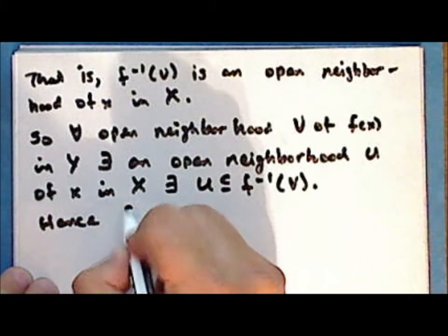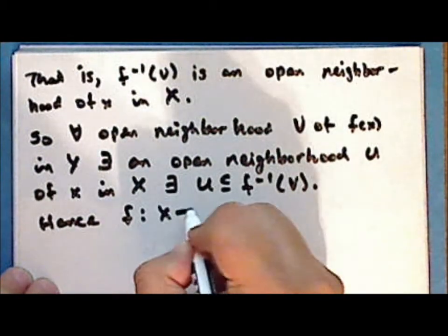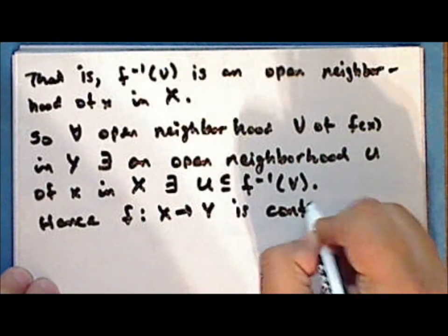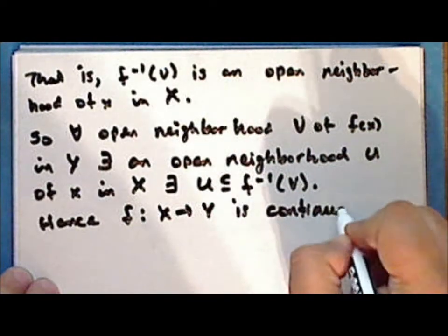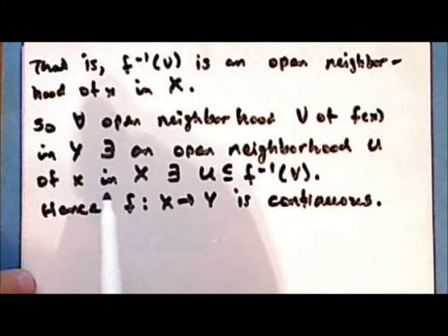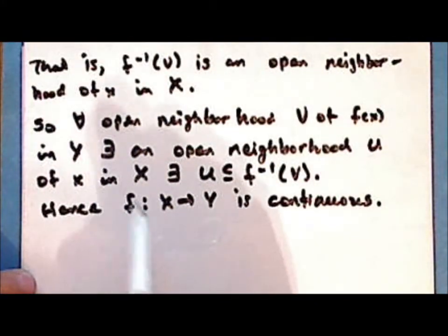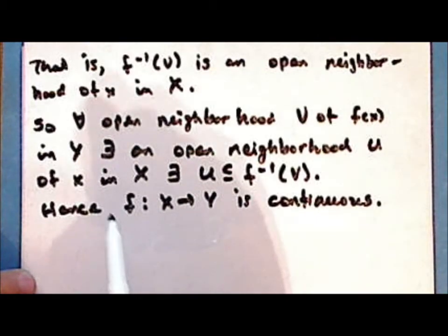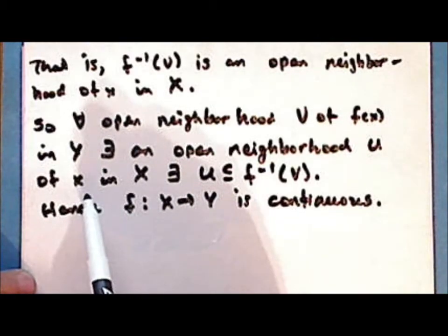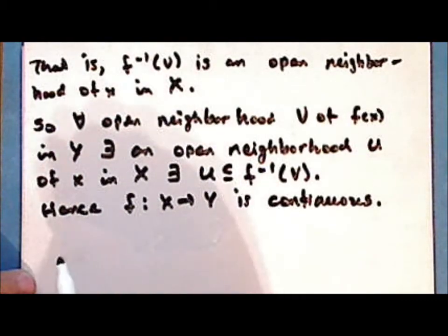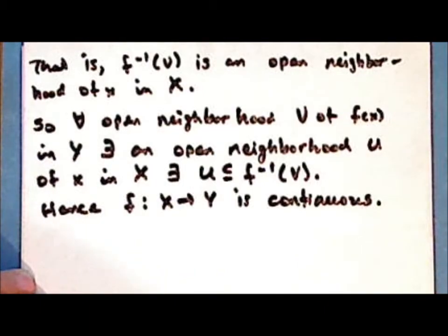And hence the function f mapping x into y is continuous. Now strictly speaking we proved that the function f is continuous at the point x. But as we chose that point arbitrarily, the function is continuous at every point x in the domain space x, and hence the function is simply continuous.